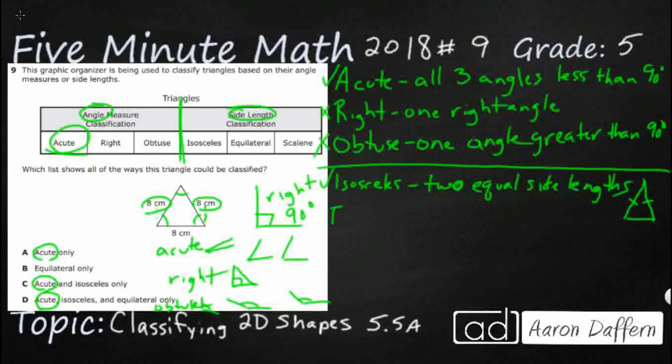So equilateral. You see that word equal almost in there. That's all three are the same. All three sides are equal. Just think of that word equal all three. And that's definitely yes. So we've got both isosceles and equilateral.